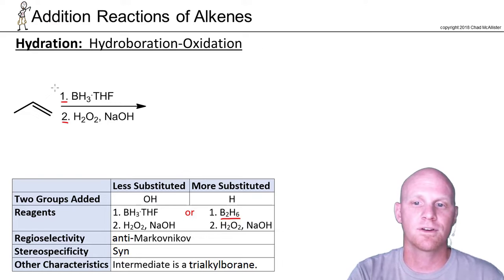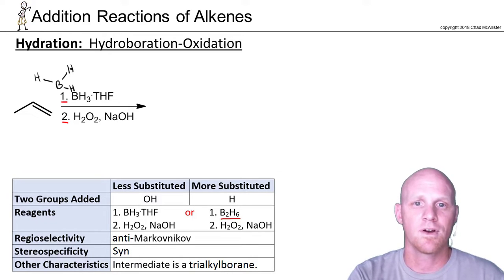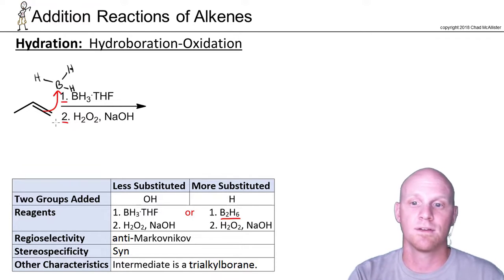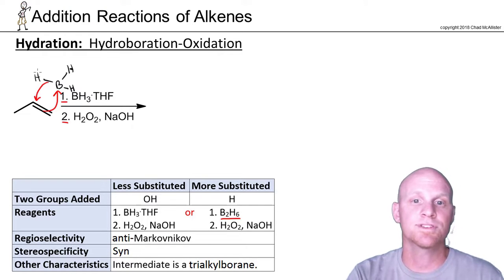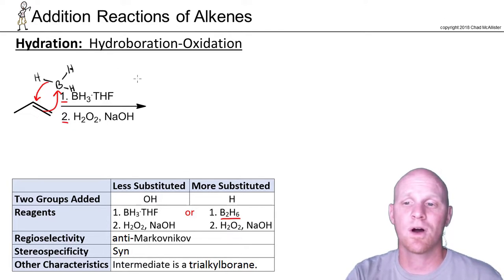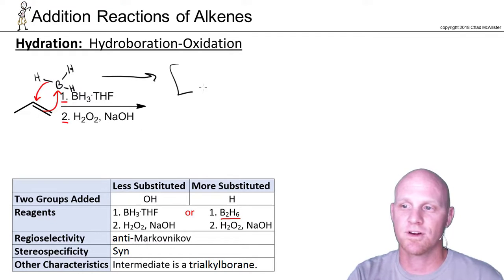Boron, famous for having an unfilled octet, is bonded to three hydrogens and is actually the electrophile being attacked in step one. Simultaneously, this boron-hydrogen bond breaks and reattaches to the more-substituted carbon — it all happens together in that one step.